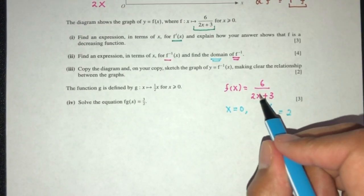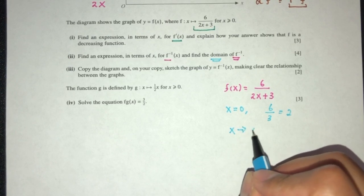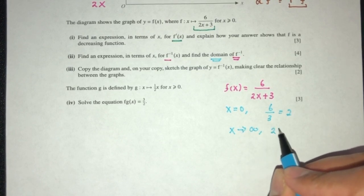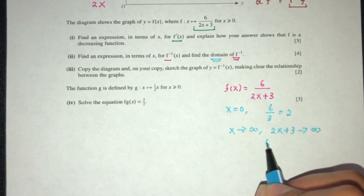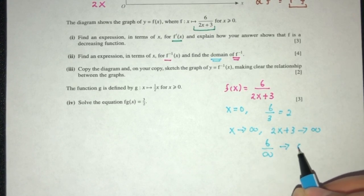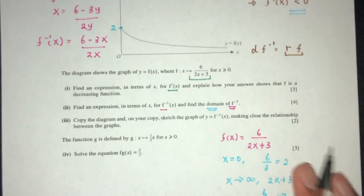By observation, if x continues to infinity, we can confirm that 2x plus 3 would also go to infinity. Now 6 divided by infinity means it is going to 0.